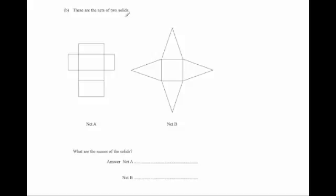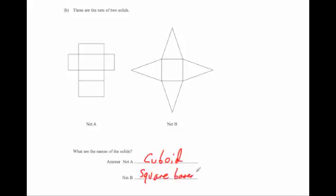These are the nets for two solids — net A and net B. Name the solids. Well, net A has got six rectangles, which means it's going to be a cuboid. You can see that's the base, the two sides, the front, the back, and then that's the top. So that is a cuboid. And net B — that's another square base pyramid. You've got your square and your four triangles which fold up, so that would be a square based pyramid.